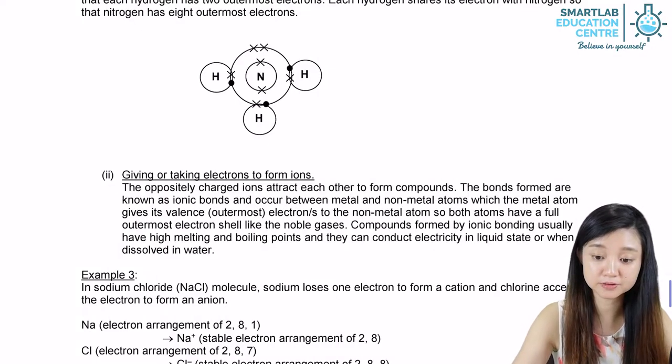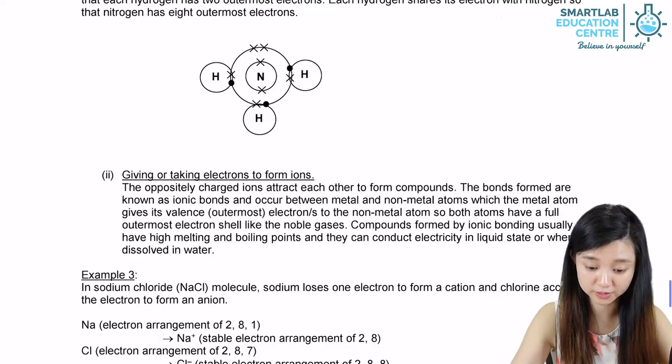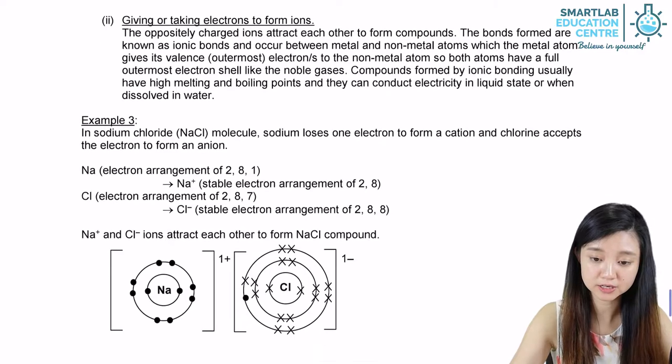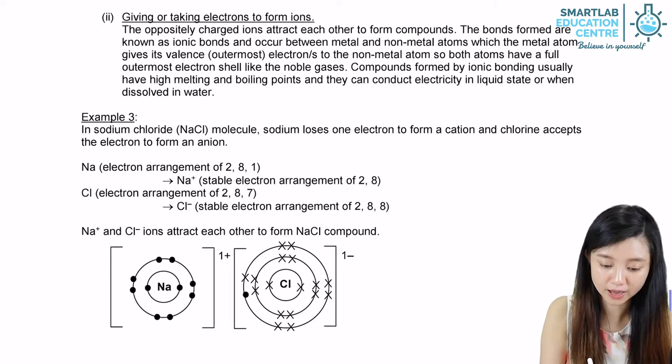If atoms attain the stable electronic configuration of a noble gas by giving away or taking in electrons, then we call the bond ionic bonding.